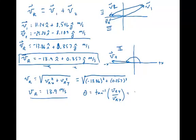And so if you do that, we just put in our values here. We're going to get 0.357 over a negative 13.86. That gives us the inverse tangent of a negative 0.0257.